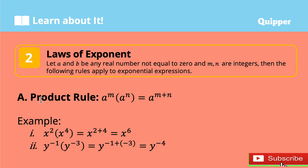First, the Product Rule. If you are to multiply 2 exponential expressions that have the same bases, just copy the base, then add the exponents. That is, a to the power of m times a to the power of n equals a to the power of m plus n. For example, x squared times x to the fourth power equals x to the power of 2 plus 4, which is x to the power of 6.